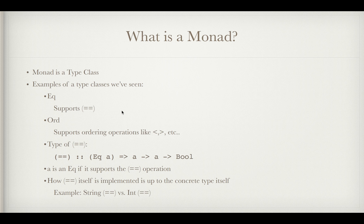So what is a monad? Well monad is a type class so here are some examples of more basic type classes that we've seen. EQ which supports the double equals test for equality operation, Ord which supports ordering operations like less than and greater than. So if we look at the type of double equals we see we just have an A to an A to a bool. So if A is equal to A, if this first variable is equal to this second variable, their types have to be equal of course, then you get true, if they're not equal you get false. So A is an EQ if it supports this double equals comparison operator.